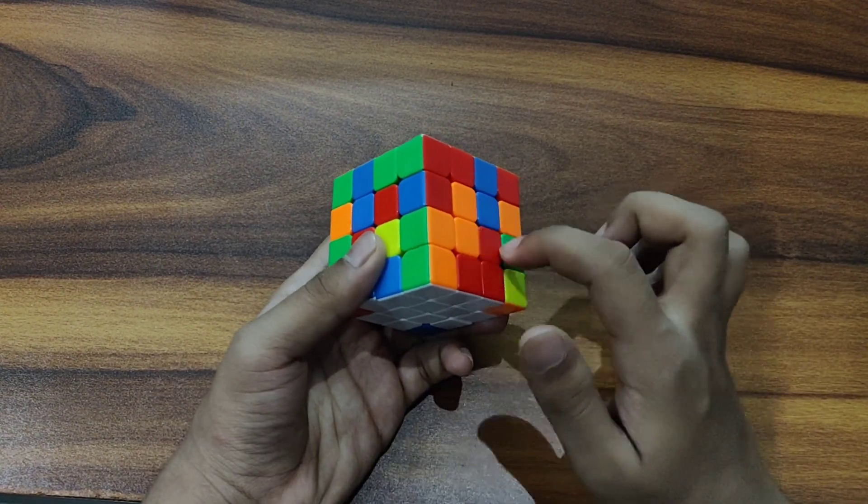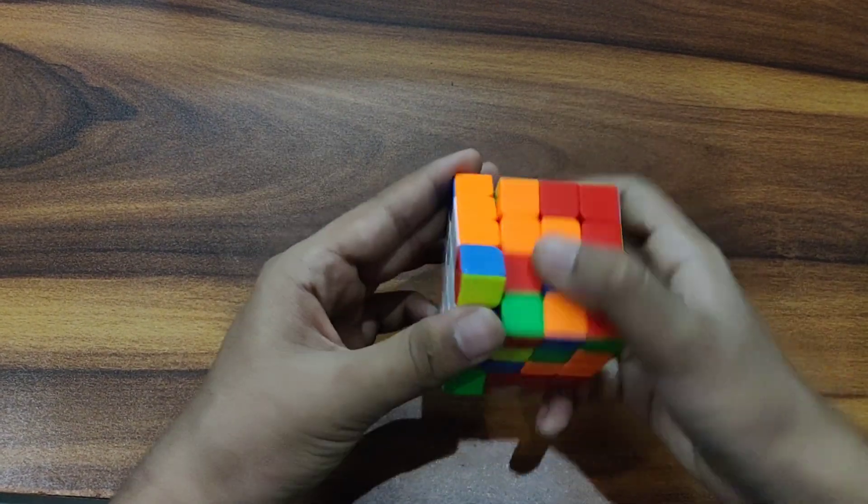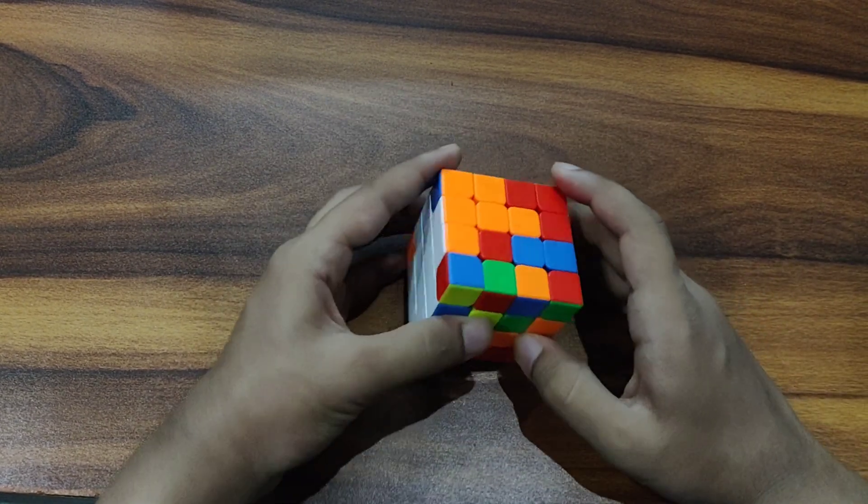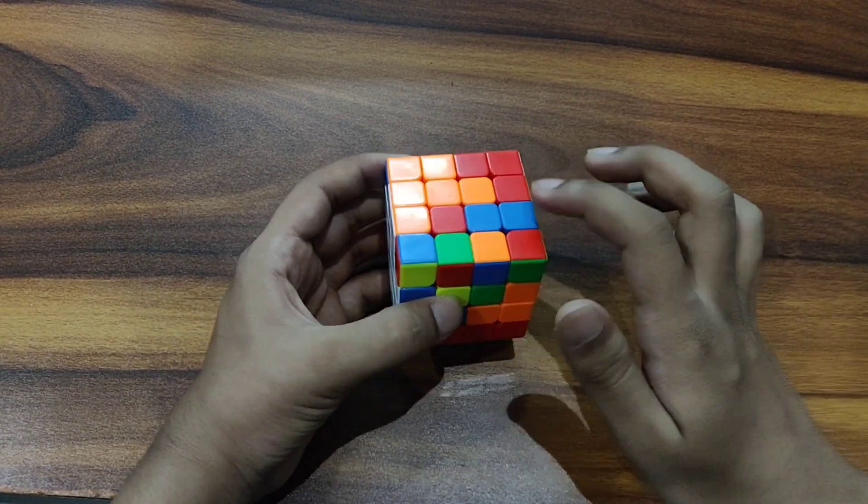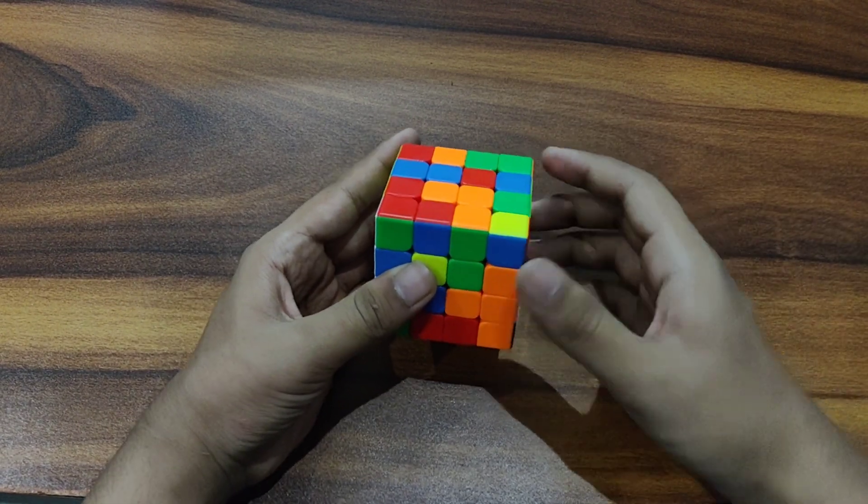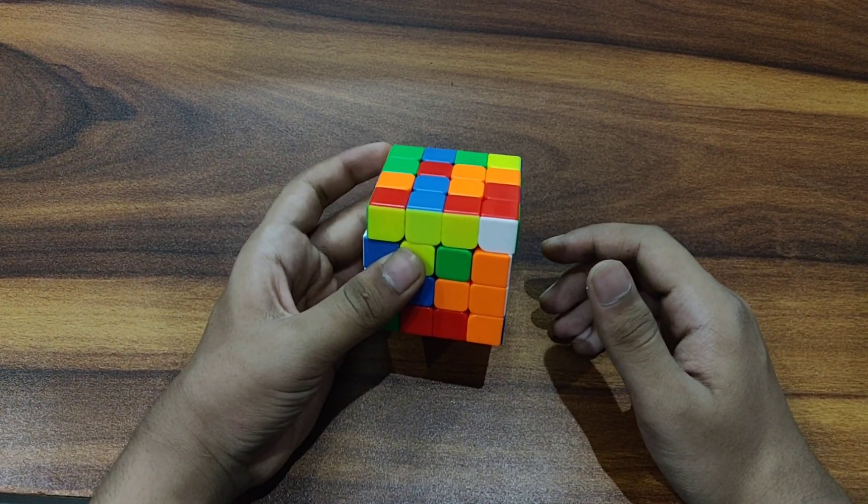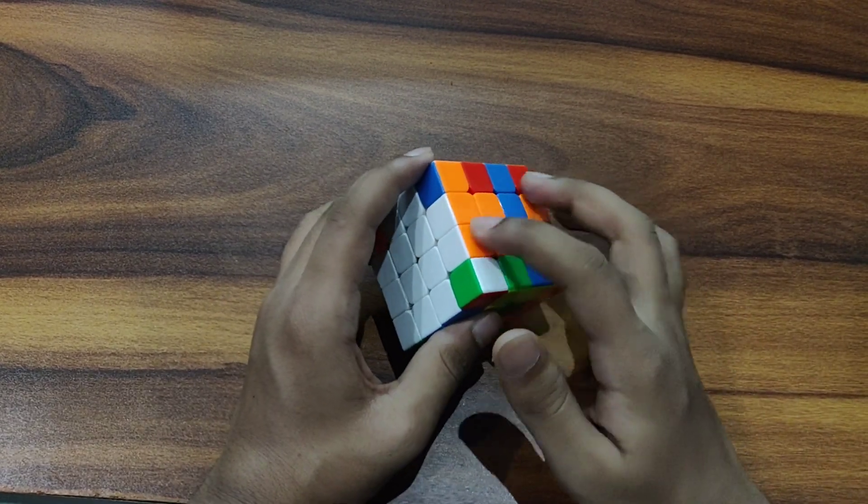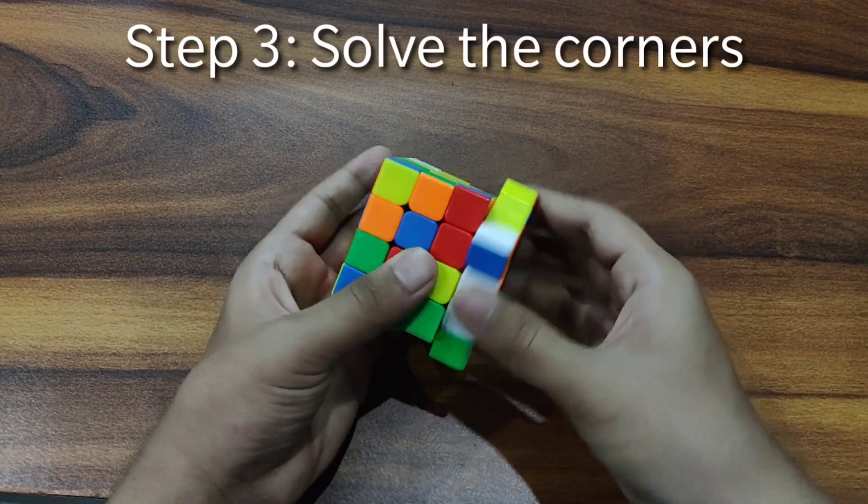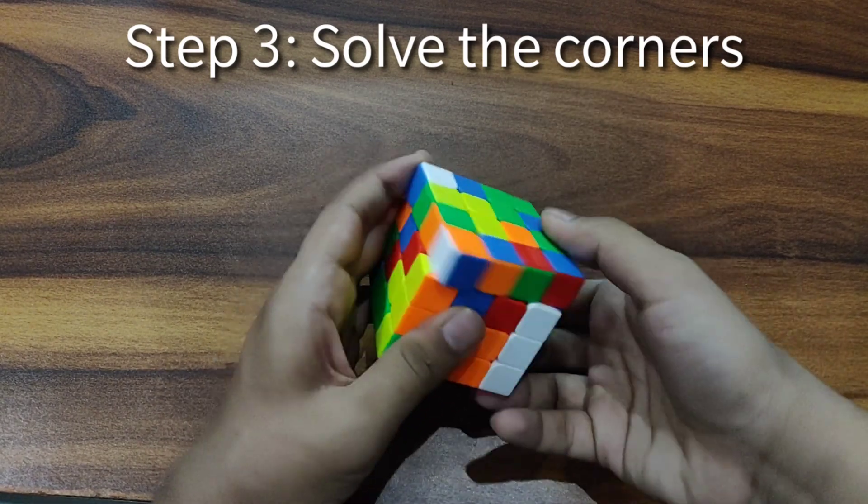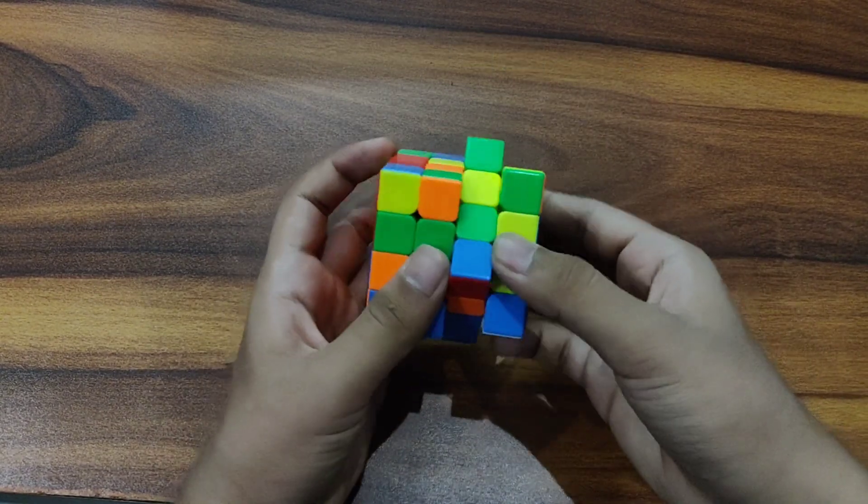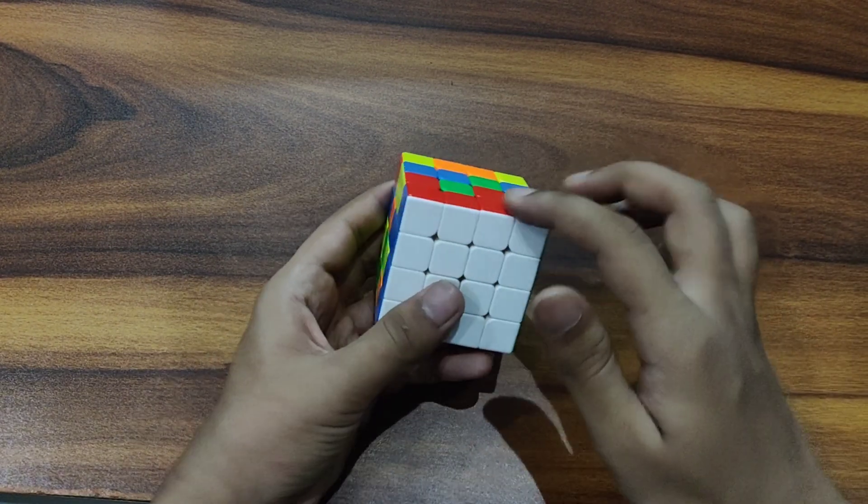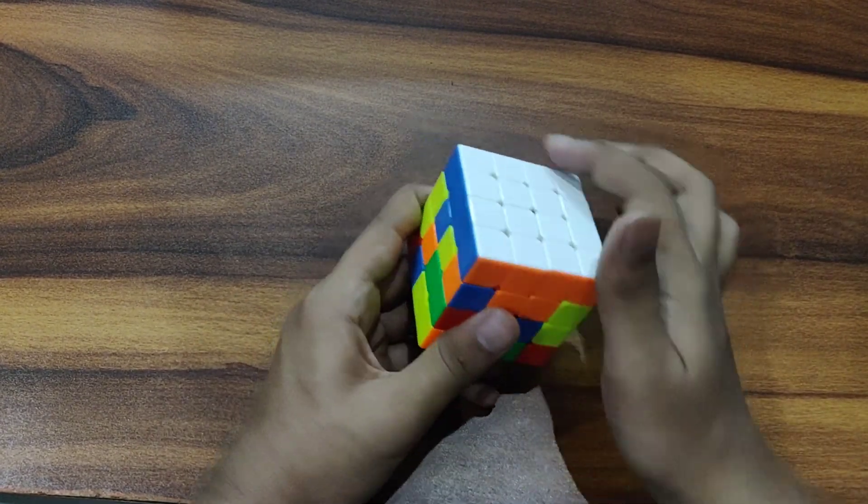Now we have to solve these half centers according to the center, like according to these cross edges. So how we can solve it is that I can bring it over here and then move it away, and then bring it here and then pair it up. Also you can solve the corners now because we are solving layer by layer not F2L type. So we will solve the corners. So here is the first layer completed.